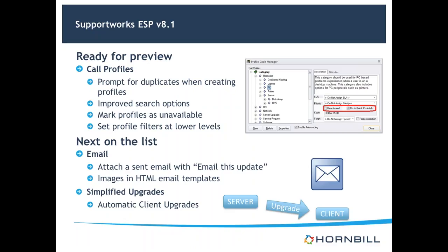Moving on to features in development — nothing specific to demonstrate yet, but these are things we're working through. First is email: the option to attach a sent email with an email list update. So if you're doing a standard call diary and you email the customer, that email gets attached to the call. With this feature, you can go back to a previous call diary entry and email that update, with the option to modify the email content. It ensures the audit trail goes in, so attachments are visible if someone comes back to review what happened.